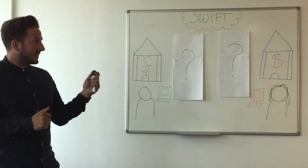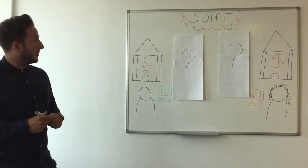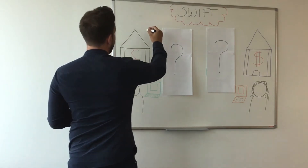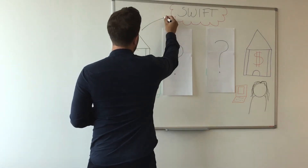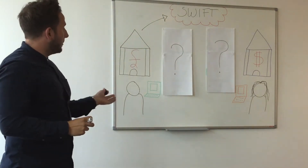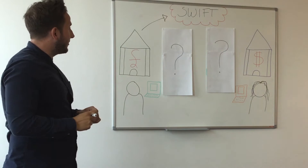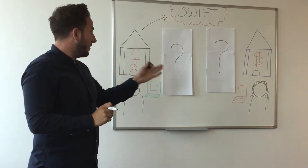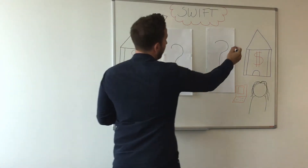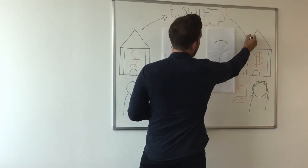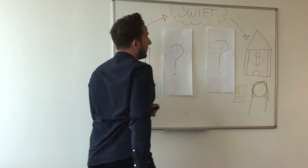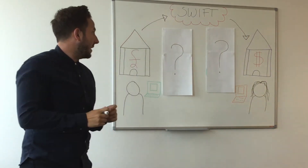One thing in common with all the payments that go through this kind of flow is that we have SWIFT. The remitting bank sends the payments through SWIFT through the various intermediaries, and then the beneficiary ultimately receives funds through SWIFT to their beneficiary bank.